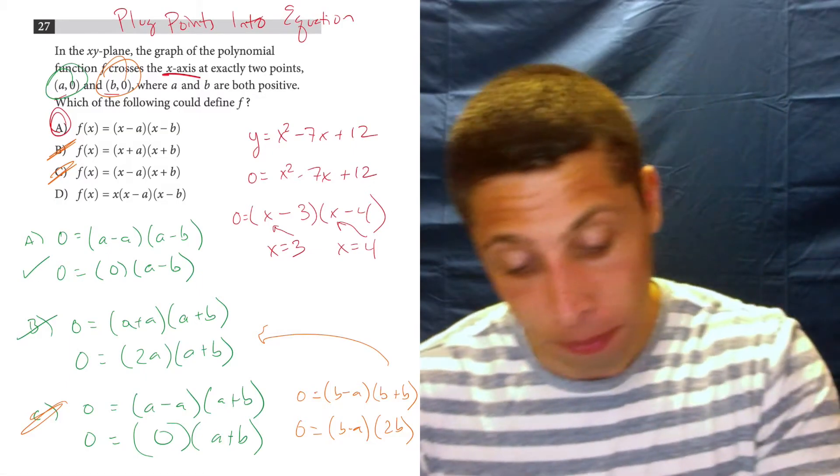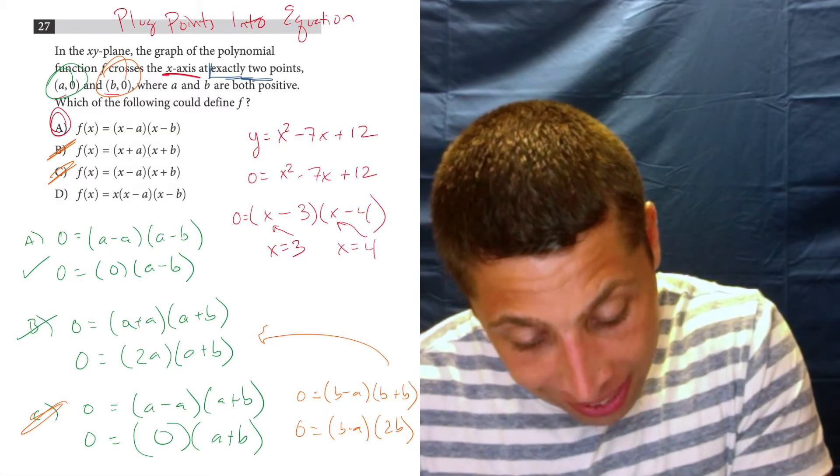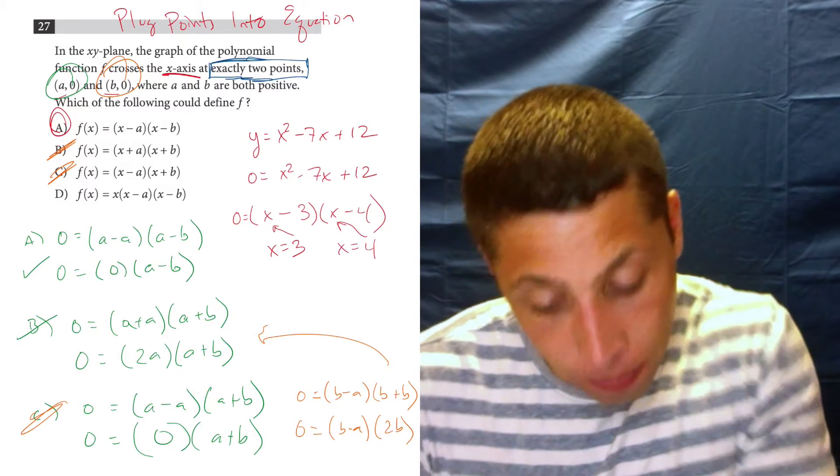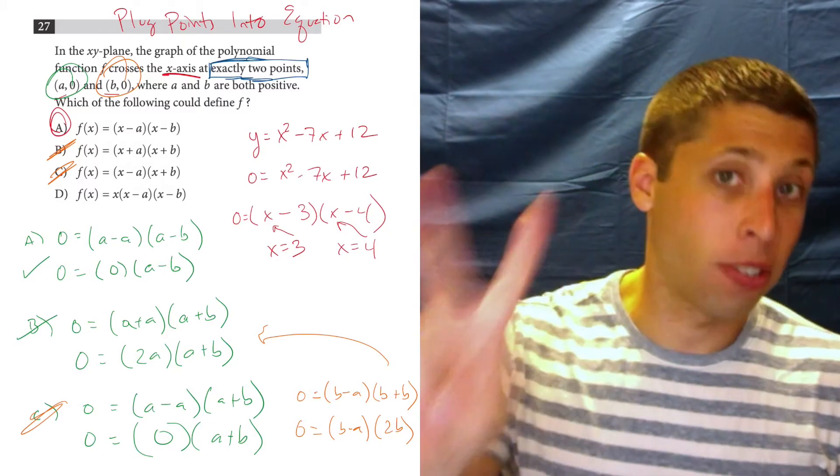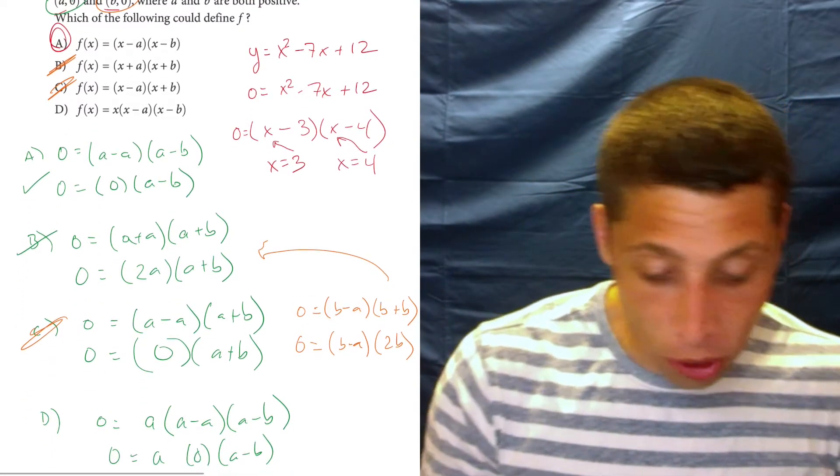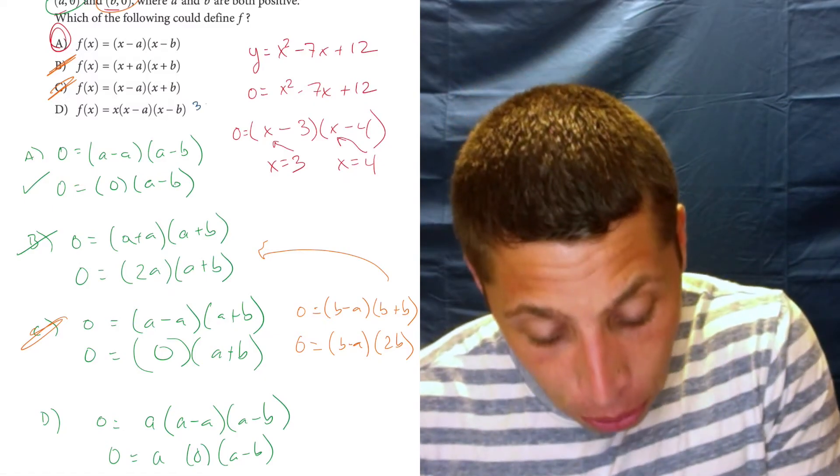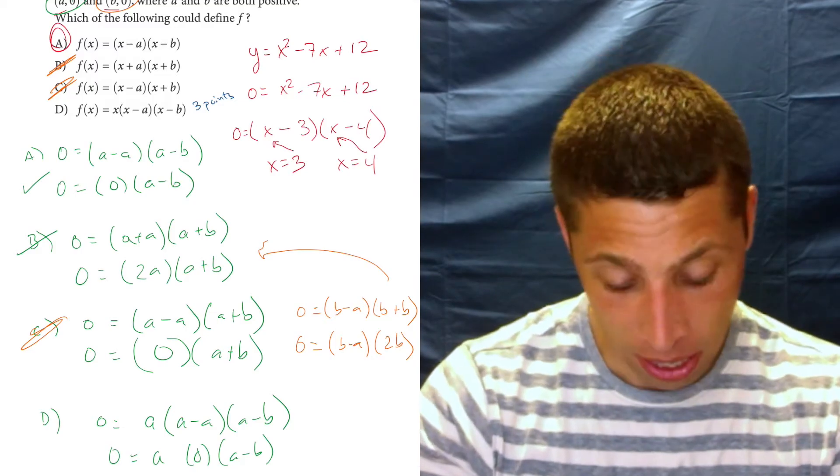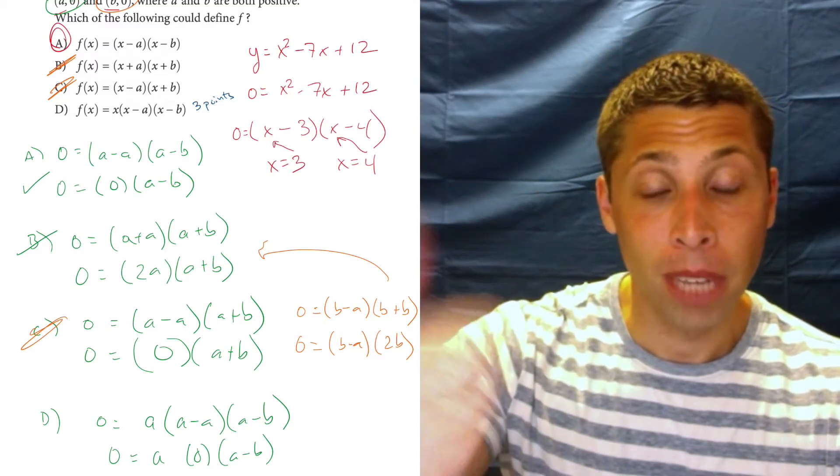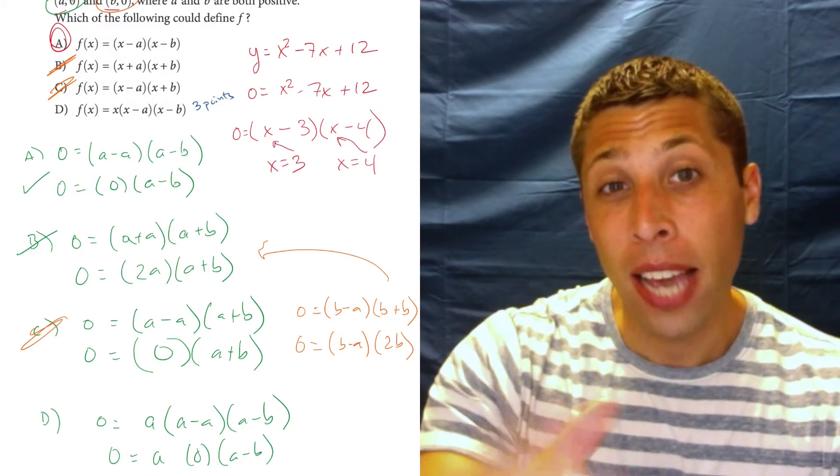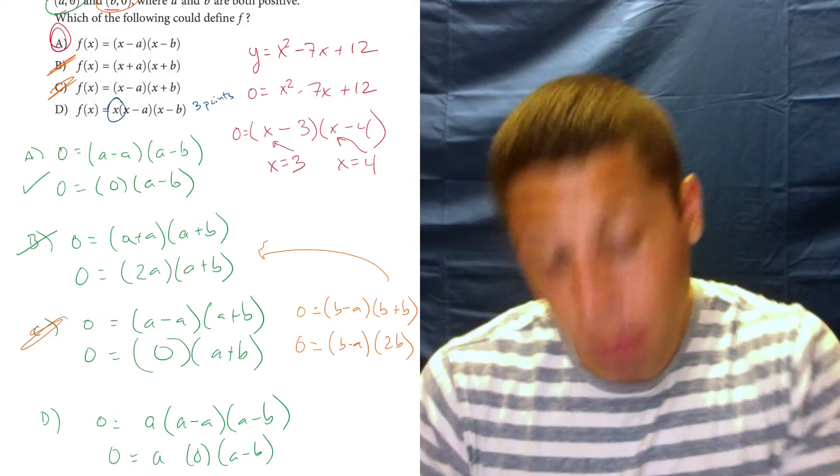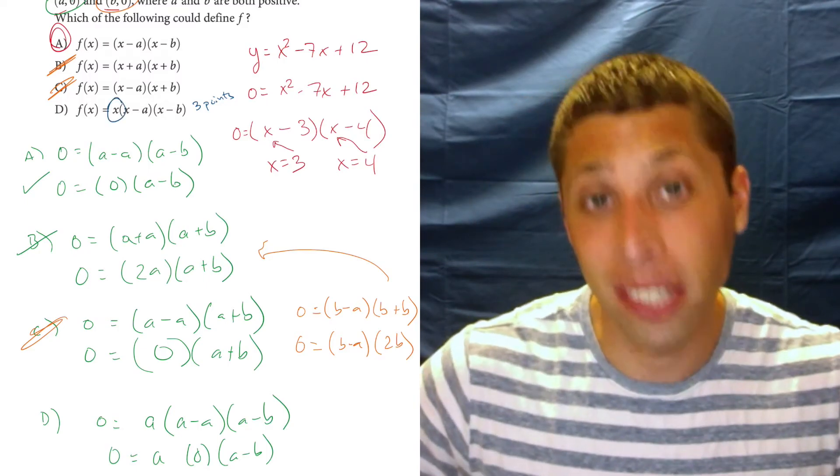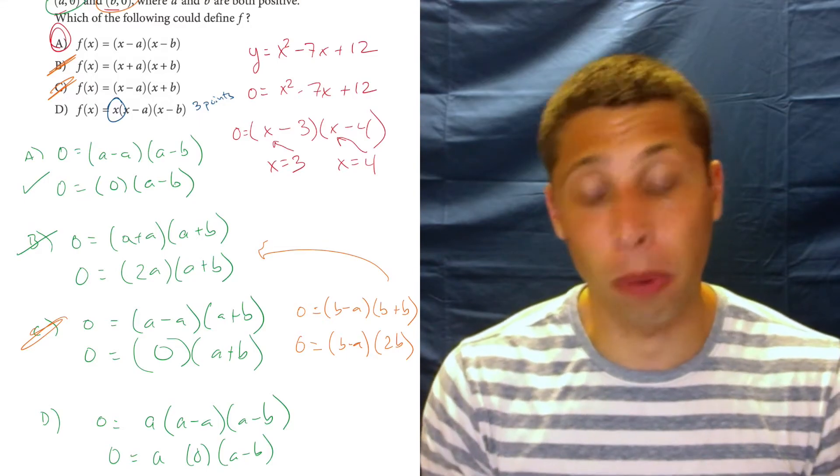But here's the key word, exactly two points, meaning it only crosses the x-axis twice. What choice d has is three points, three crosses of the x-axis. One of them would be at a, one of them would be at b, and the other one right here would be at 0. When x is 0, this whole thing is 0, too, so that causes a problem.